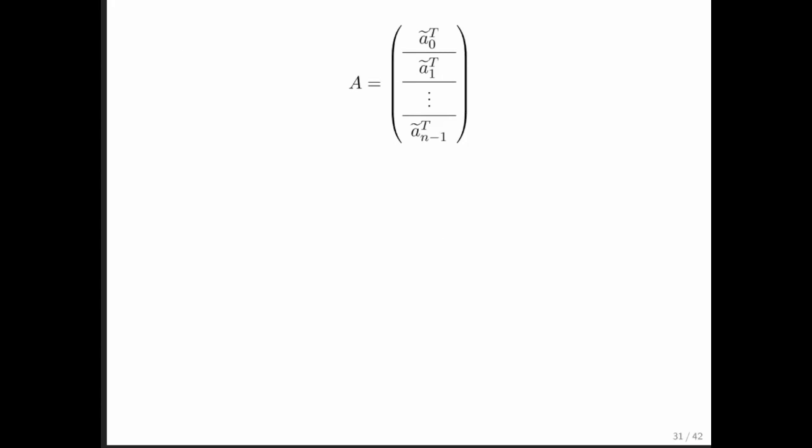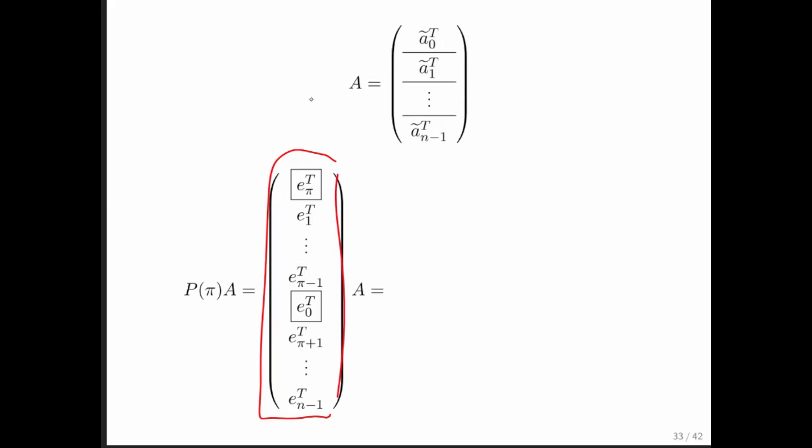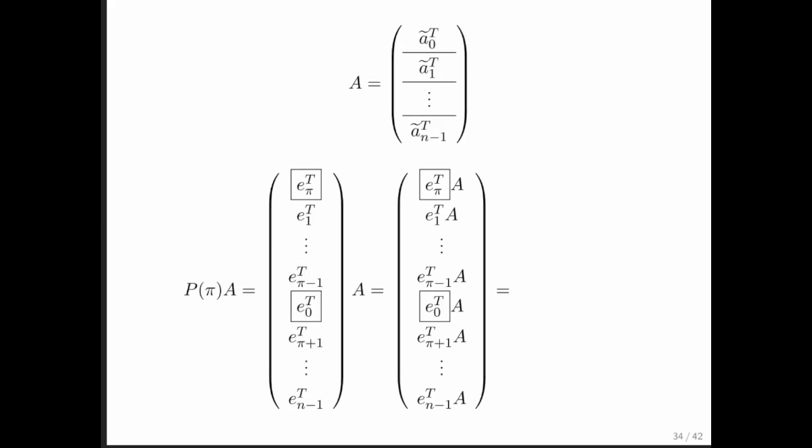So what happens when you apply a pivot matrix to matrix A? Well, here we have our pivot matrix. Here we have a matrix A. Again, we can do partition matrix matrix multiplication to get to this point. And what we notice is that all of the rows of A, except for the indicated ones, stay the same. And it is row indexed with 0 and row indexed with pi that are swapped.